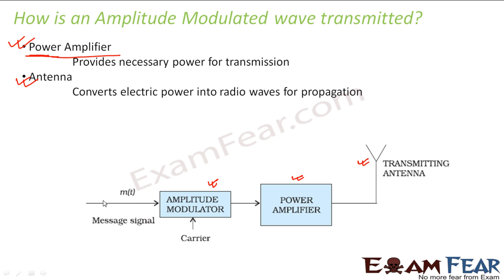So now you understand the entire process. Everything starts with the message signal. It will combine with the carrier wave, forming a wave which goes into the square law device. The square law device produces an output which is made to pass through the band pass filter. The filter rejects all unwanted components, and the result is an amplitude modulated wave. Then it is passed through a power amplifier so that the power is increased and it becomes even better for transmission. Then it is passed through the transmitting antenna, which converts this electrical signal into radio waves. And those radio waves will be propagated through the channel.